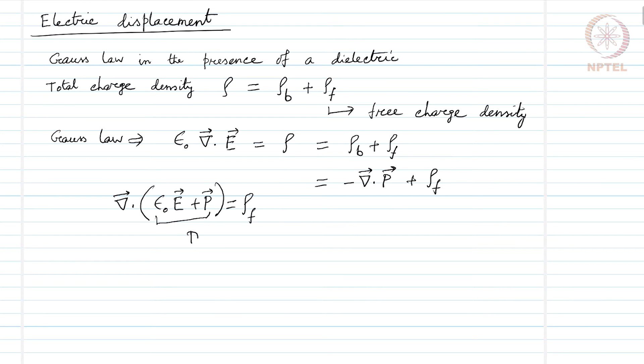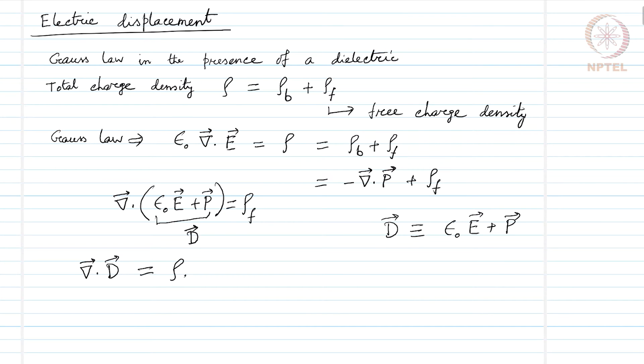The electric field is not the only field that matters — the polarization also corresponds to the free charge density. The divergence of polarization has a correspondence like that, and this quantity, let us call it the displacement vector D in the presence of a dielectric material. So, D is expressed as epsilon naught E plus the polarization vector, and in terms of D, the divergence of D becomes the free charge density.